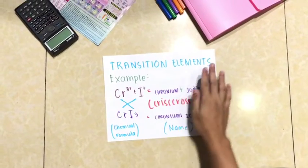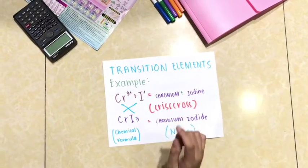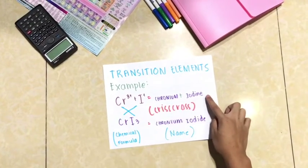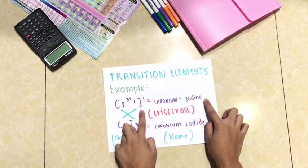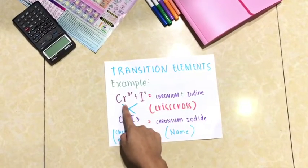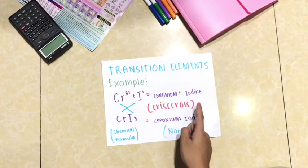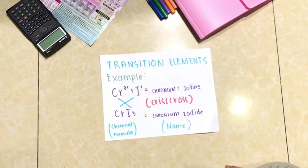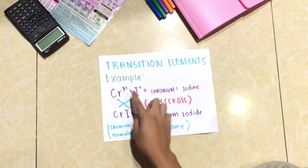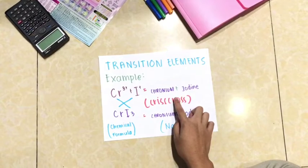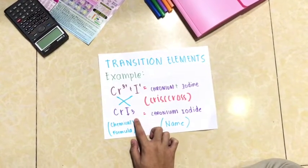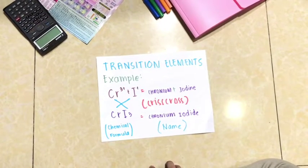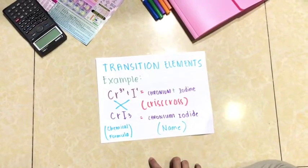For an example of transition elements, we have chromium represented by Cr and iodine represented by I. Chromium has a superscript of 3 and iodine has a superscript of positive 1. When we do the criss-cross, the superscript of chromium becomes the subscript of iodine. Therefore, it becomes CrI3, which equals chromium iodide.